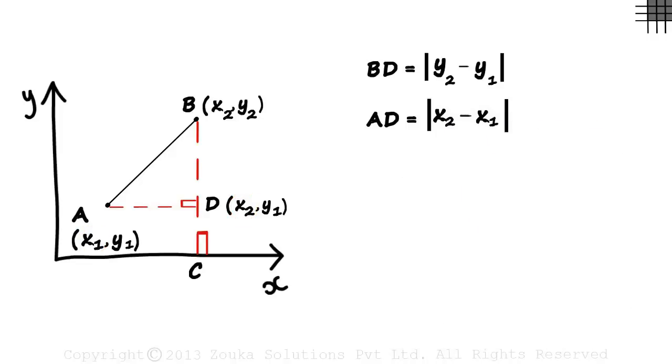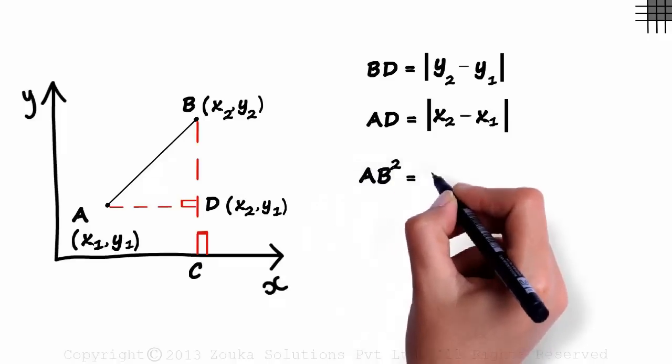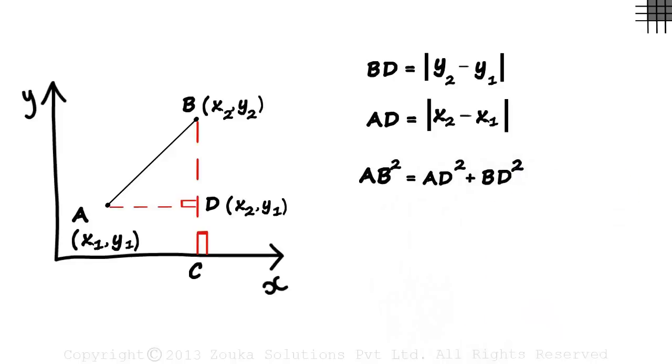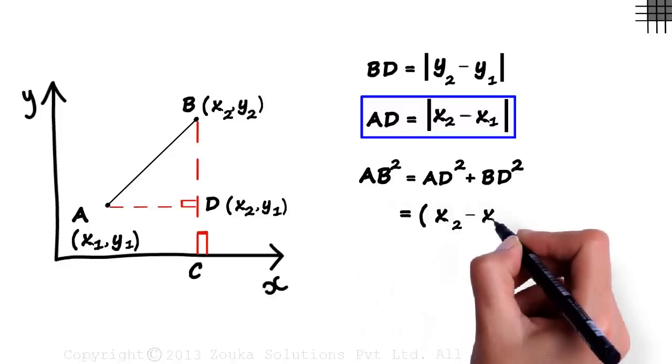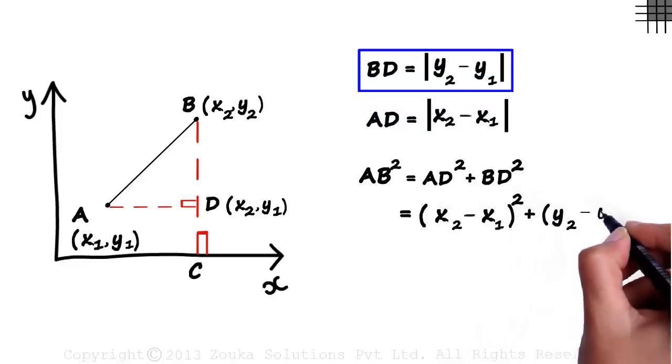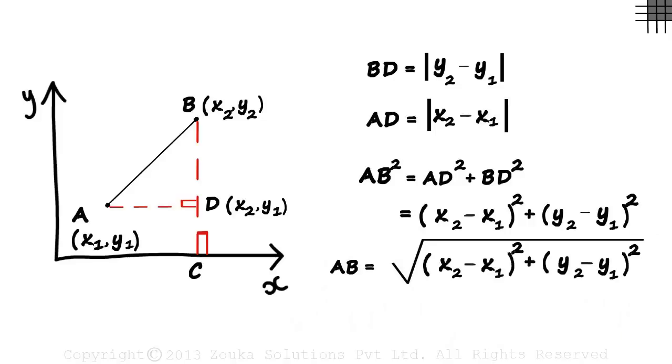Using the Pythagoras theorem in this triangle, we get AB squared equals AD squared plus BD squared. Substituting these values, the expression will equal x2 minus x1 the whole squared, plus y2 minus y1 the whole squared. So length of AB will be the square root of the addition of these two.